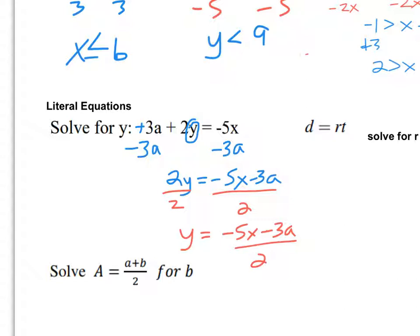To the right, we're solving for r. Here r is being multiplied by t, so to get rid of multiplication we divide. So r equals d over t.